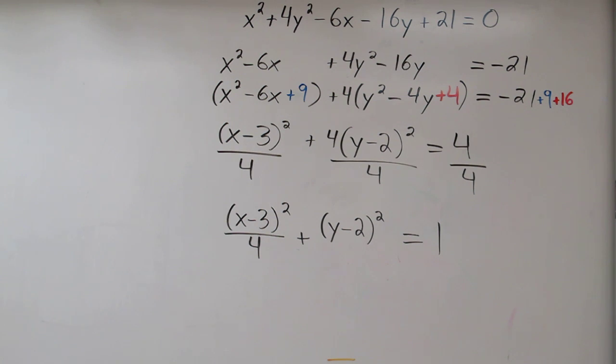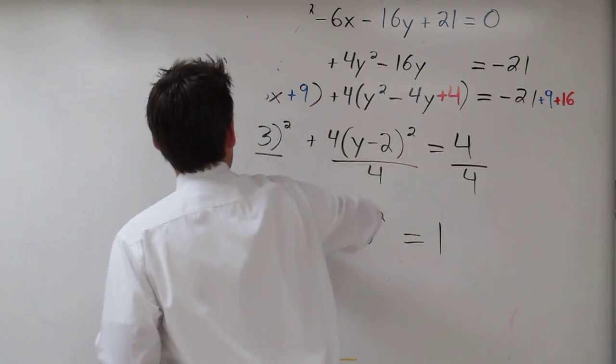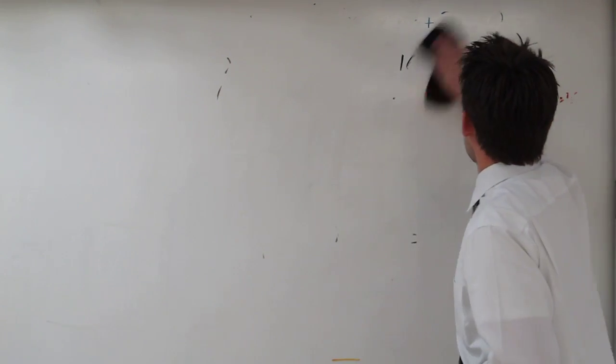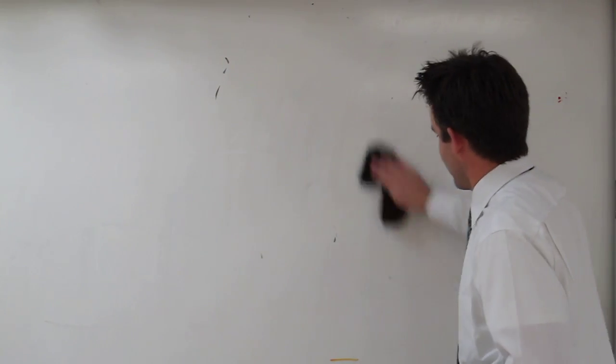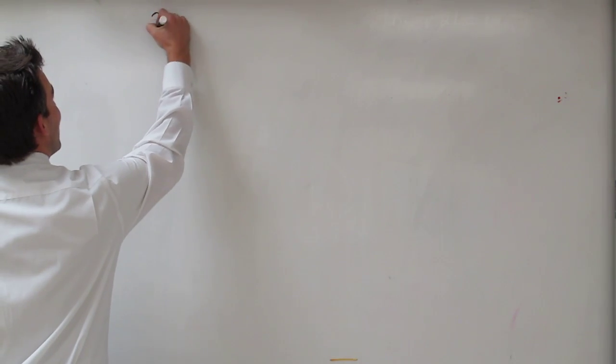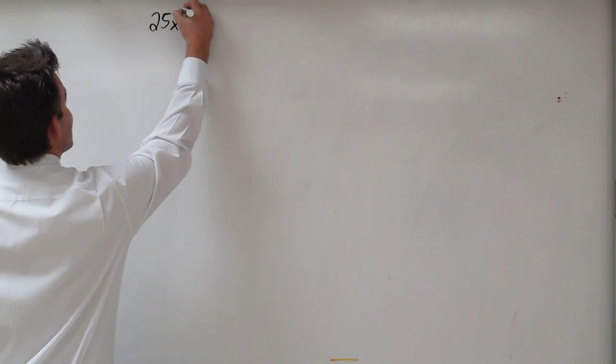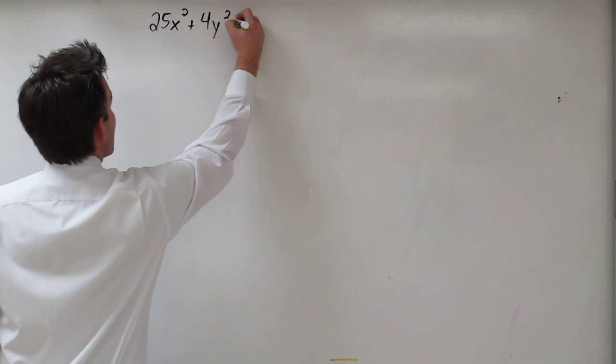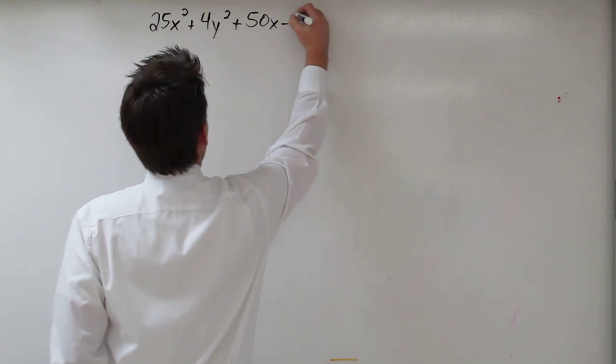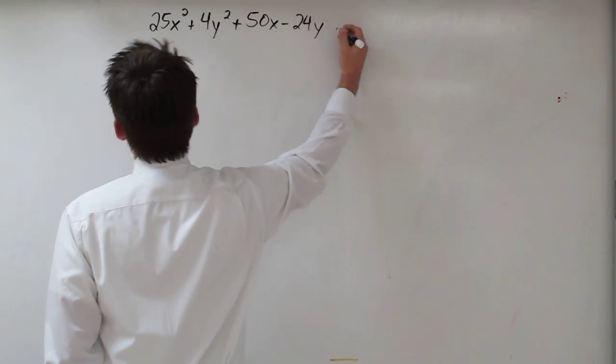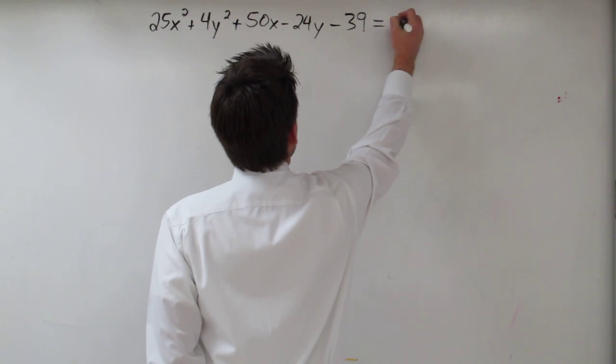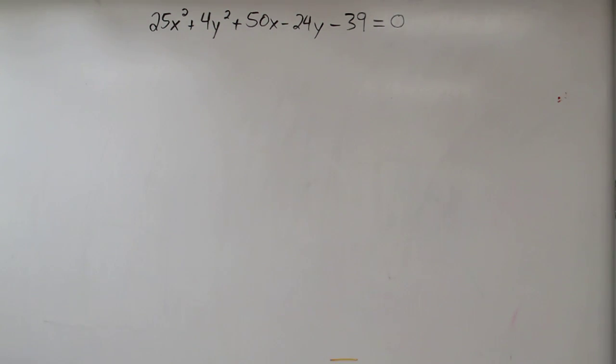Let's do one more example. Let's try 25x squared plus 4y squared plus 50x minus 24y minus 39 equals 0. Now you may want to try this one really quick. Pause the video, try it, and see if you get the same answer as me.